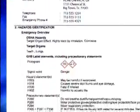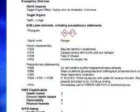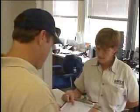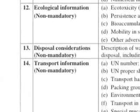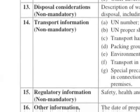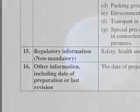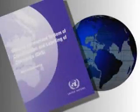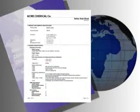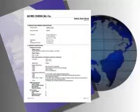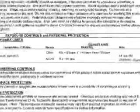Each section must be in the order listed with the minimum required information as stated. If no relevant information is found for any given subheading, the SDS must clearly indicate no applicable information is available. Sections 12 through 15 fall outside of OSHA's jurisdiction and therefore are not mandatory regarding OSHA. They are part of the globally harmonized system of classification and labeling of chemicals and will often be included on the SDS, and for this reason are included in this training program. Here are the 16 different sections of the SDS as required by OSHA.